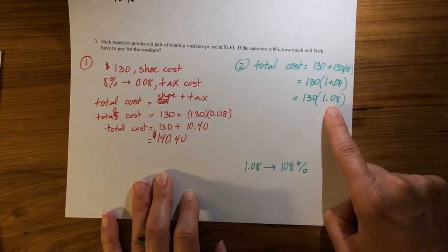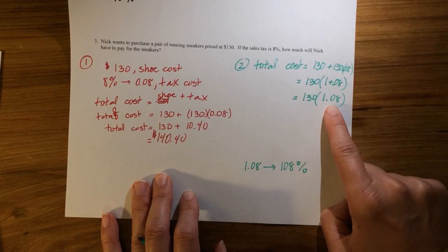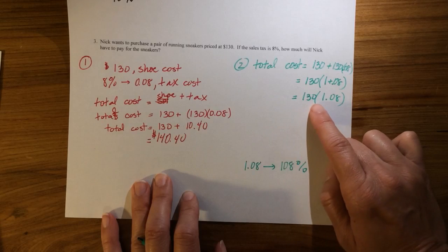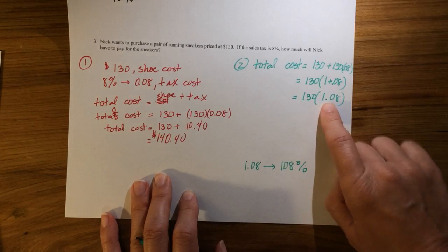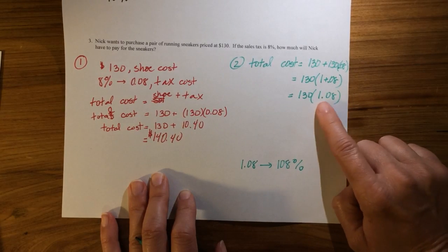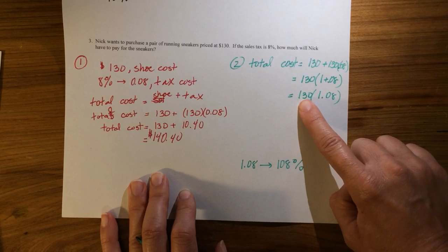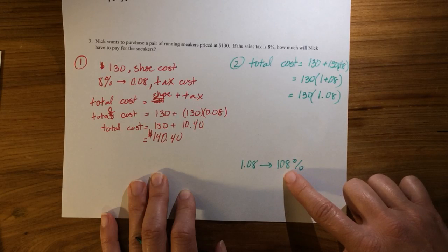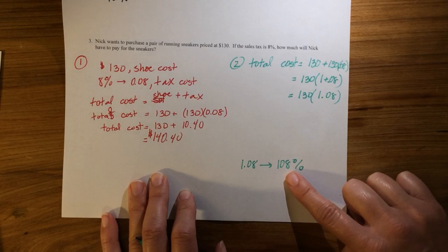So what we can do is we, in one swoop, rather than finding the tax, then adding it, we can just say, okay, 130 times 1.08. The 1 includes the 130. The 0.08 includes the tax, so we're paying 108 percent total.